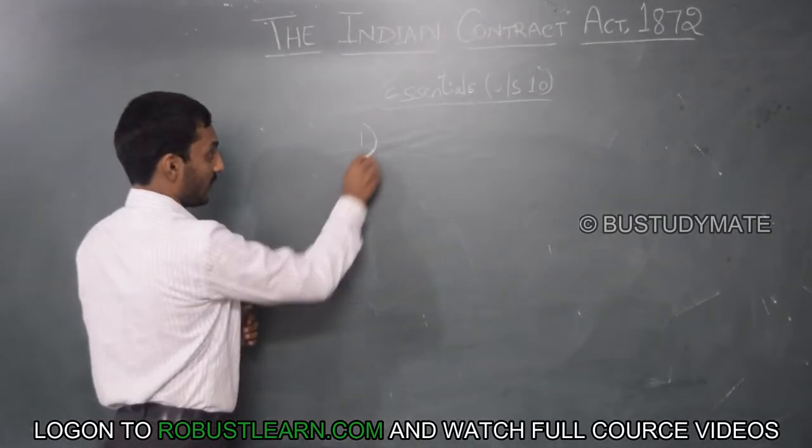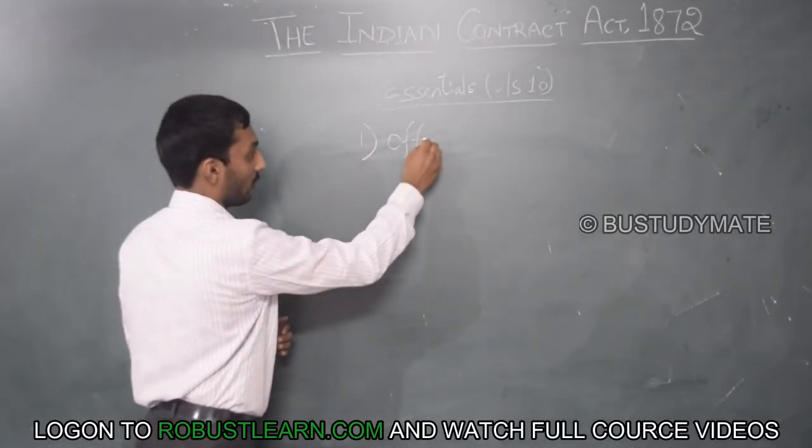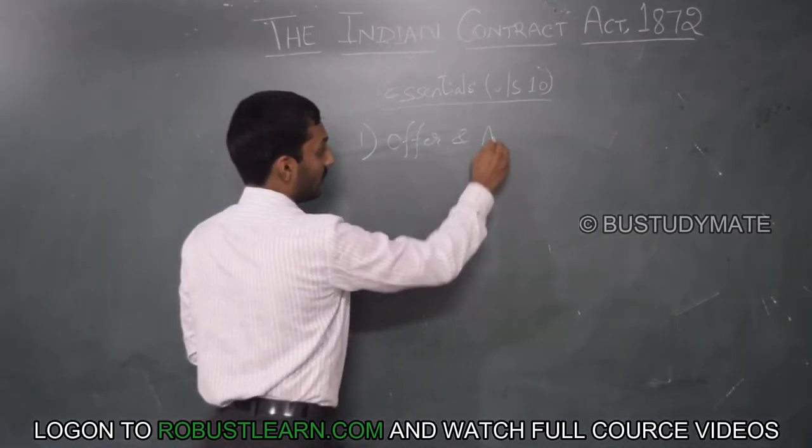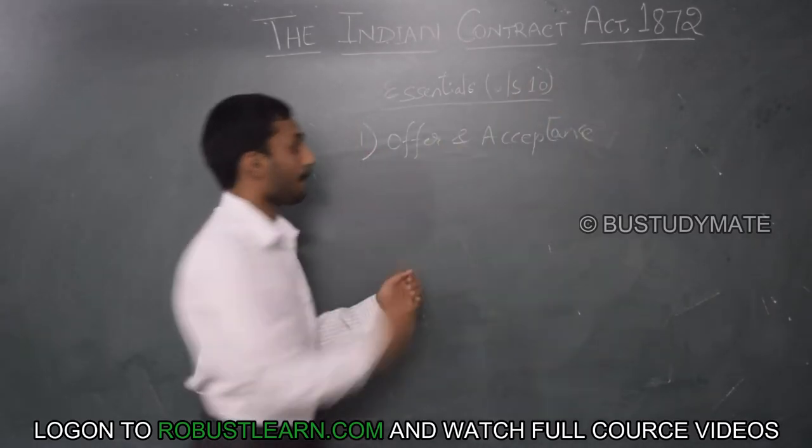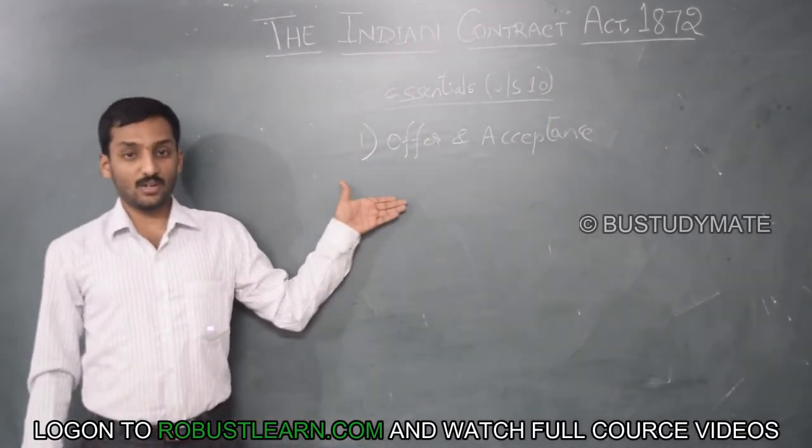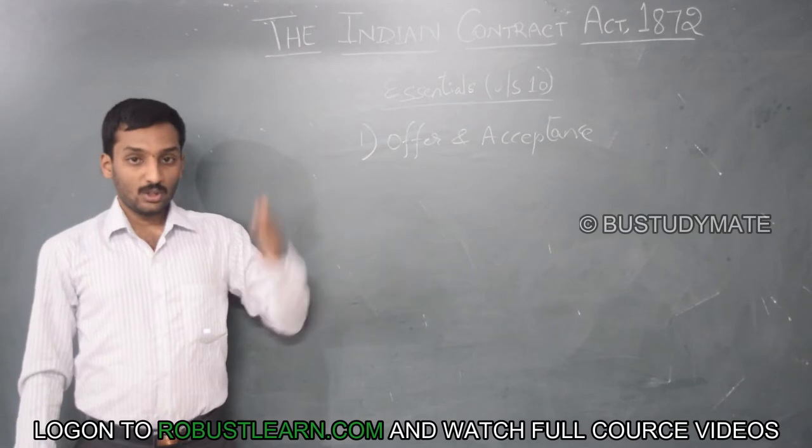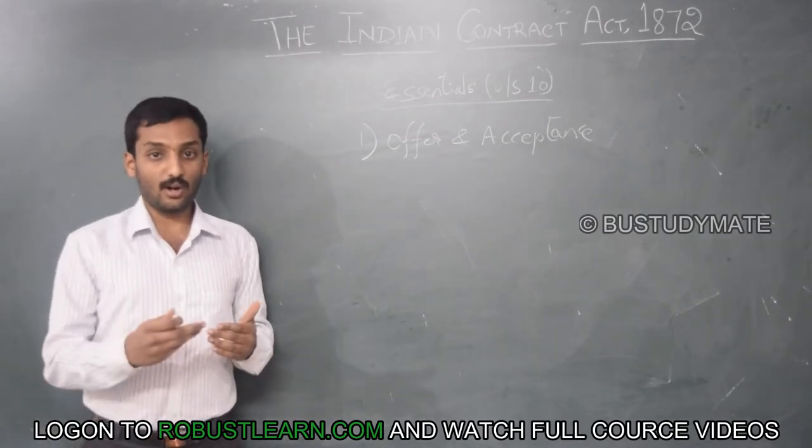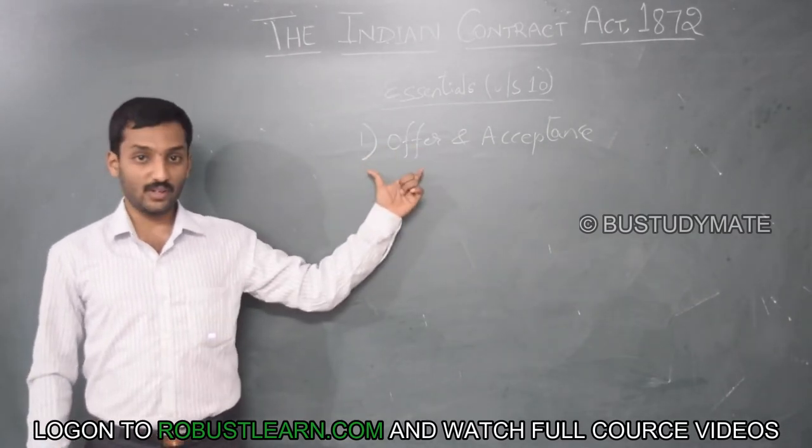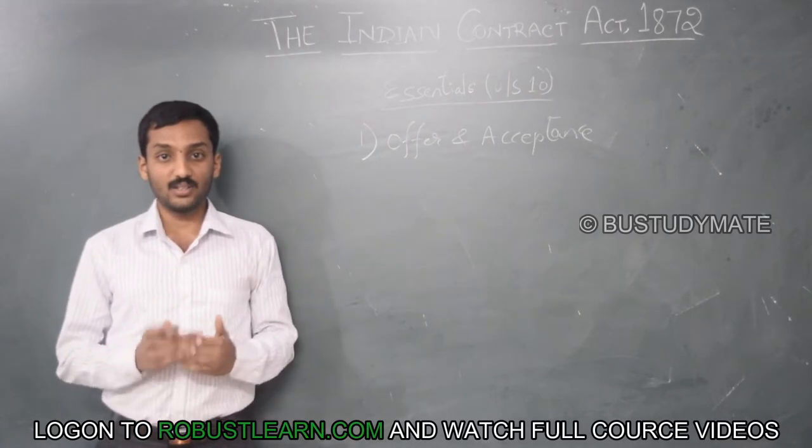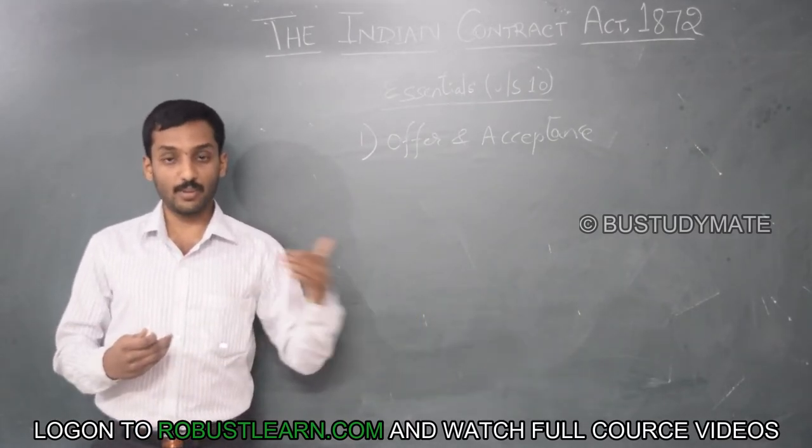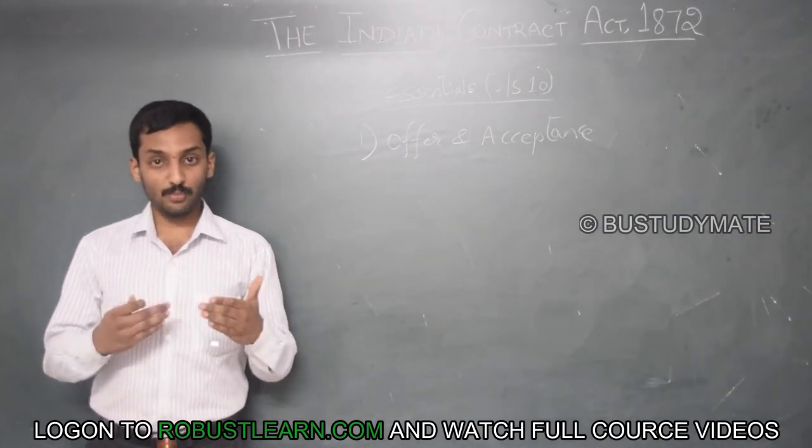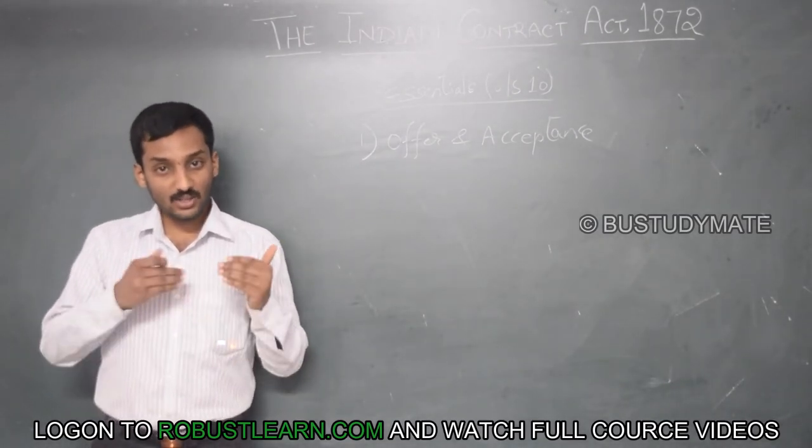The first one is offer and acceptance. The basic rule is, to call an agreement as a contract, it should have a valid offer and a valid acceptance. That is, the offer made by the person and the acceptance made by the acceptor should be valid and should be justifiable.